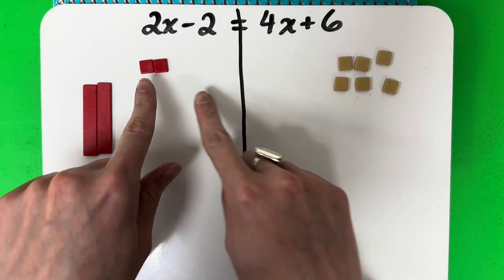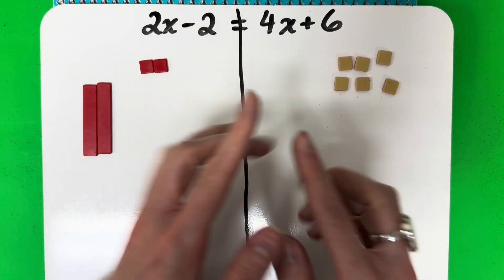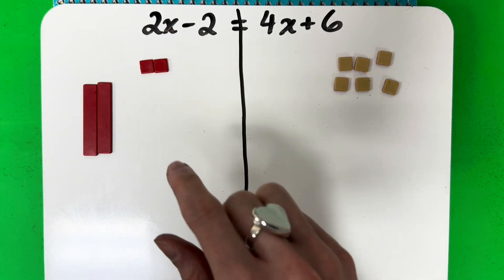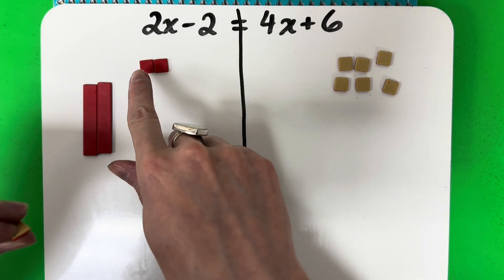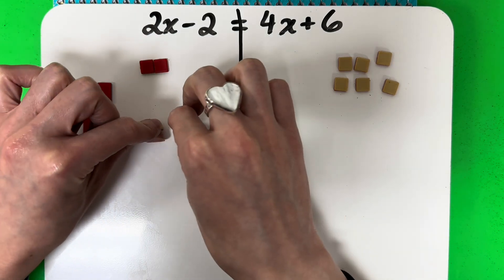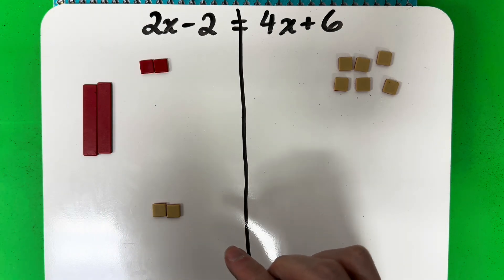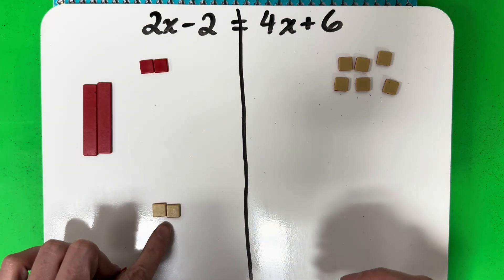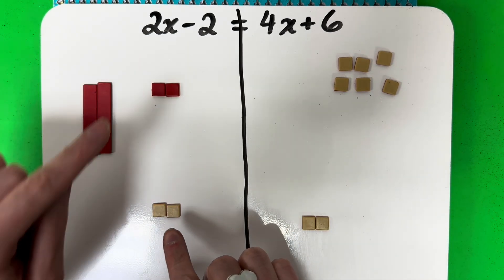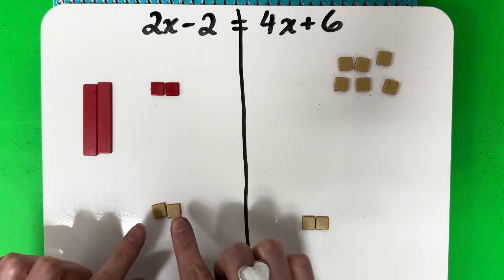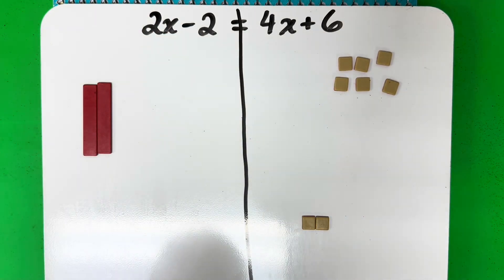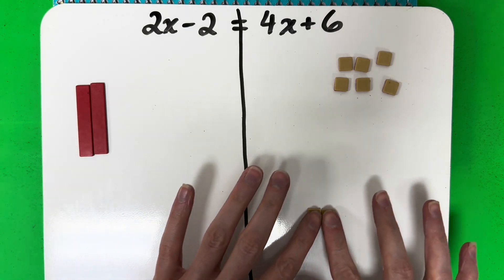To cancel them out from the left, I'm going to put the opposite. So if I have two red ones, I'm going to put two of the other color — two positives. And remember, what I do to one side I must do to the other side. So if I put two positive here, I'm going to go ahead and do two positive here. These are negative two, so two minus two is zero — these cancel out, they're a zero pair.